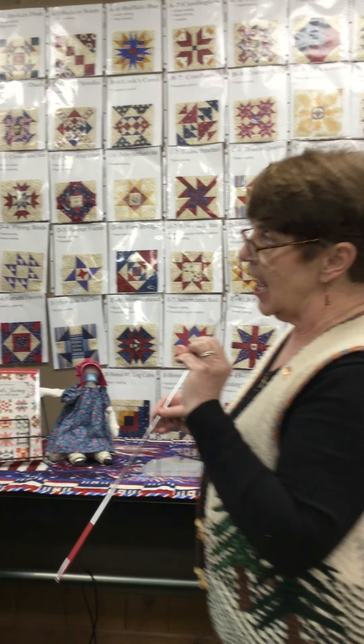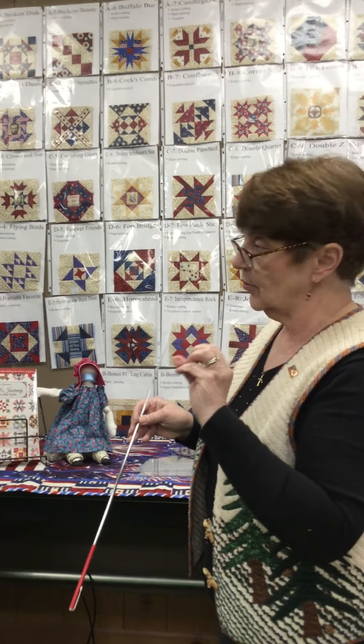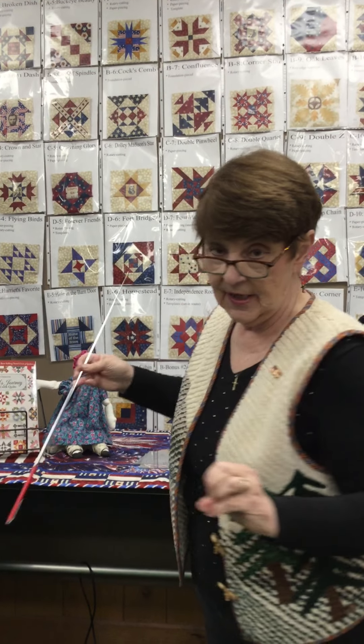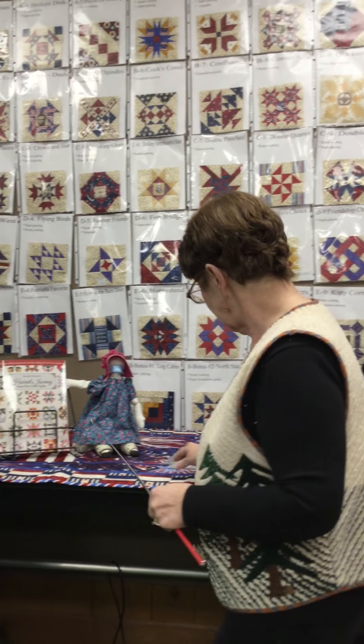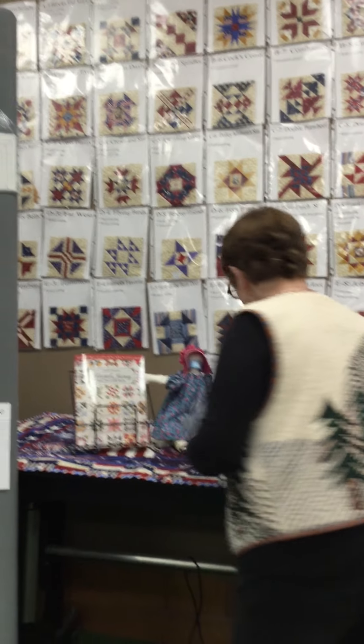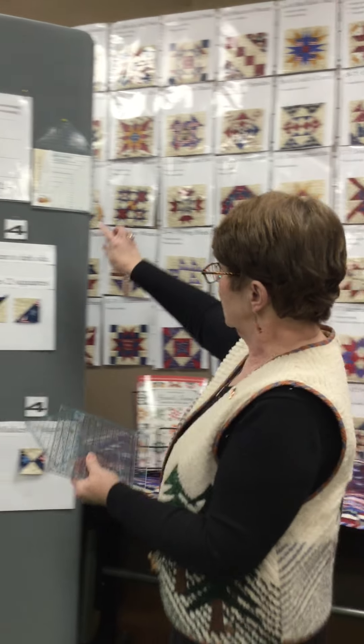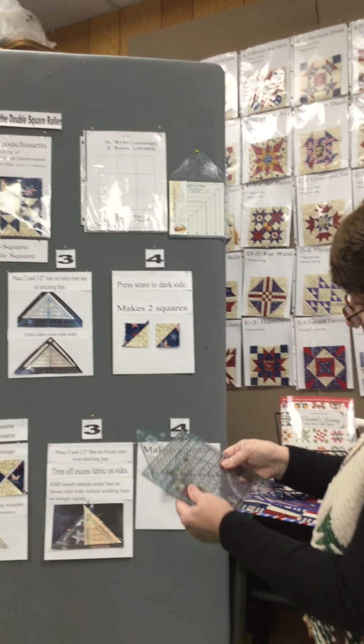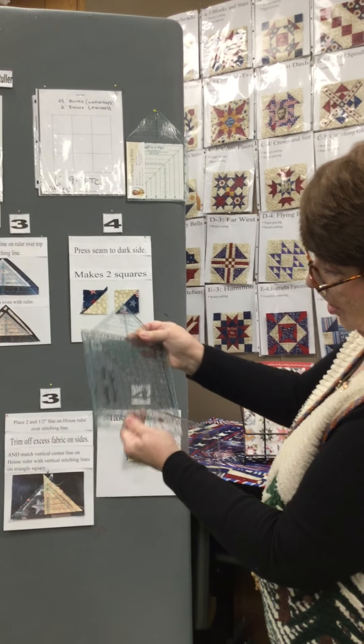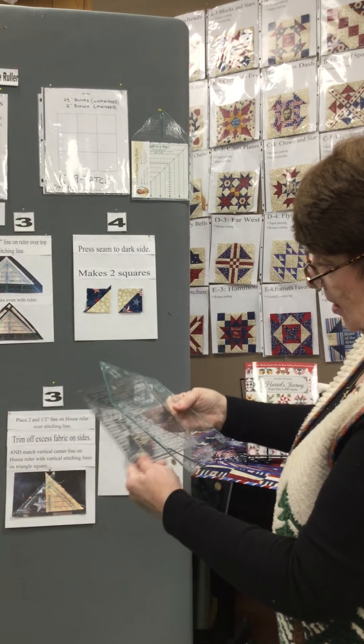We'll focus on how to make sure that you get an accurate six and a half inch block, because this whole quilt is 106 six and a half inch blocks. The ruler that Eleanor developed is called a double square up ruler, and I just brought in a couple of our older rulers so you could see what it is.